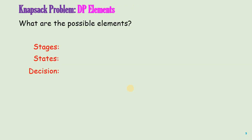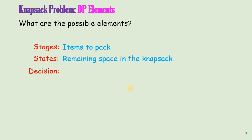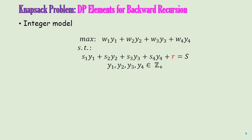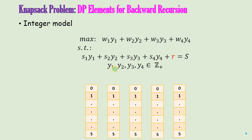Now, let us try to identify the dynamic programming elements for the Knapsack Problem. As we have seen in our first video, the stages for the Knapsack Problem will be items to pack. The state will be the remaining space in the knapsack. And the decision will be how many units to pack. All we have to do is add a slack variable that represents the remaining capacity. Using this variable, you can define the following stages, where each stage corresponds to an item being filled and the last one corresponds to none of the items being filled. And the states correspond to the remaining capacity at each stage.